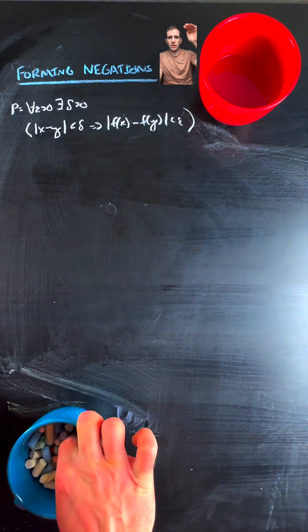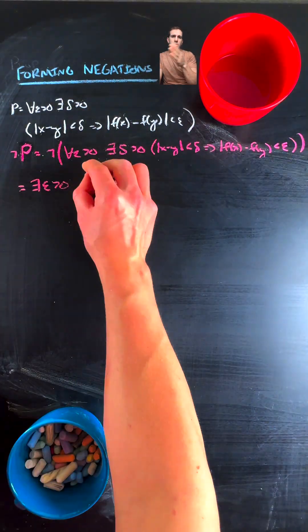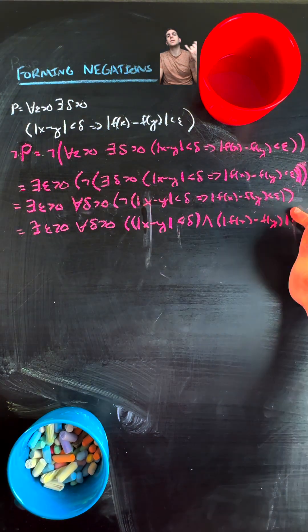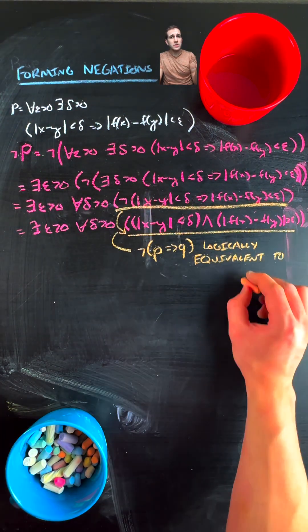This first example is a little bit more step by step. You move the negation through quantifiers, flips the quantifier, move it into the overall statement, and then you do some logical equivalent stuff there.